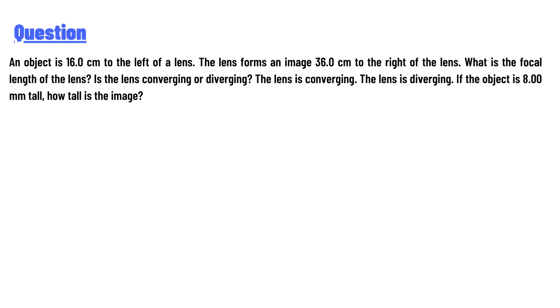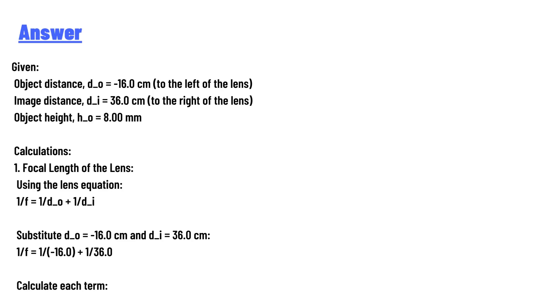The lens forms an image 36 centimeters to the right of the lens. What is the focal length of the lens? Is the lens converging or diverging? If the object is 8 mm tall, how tall is the image? The answer to the question is given.